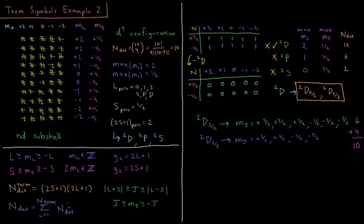In this video we'll do our second example of determining the term symbols of an atom. We have an atom where every subshell is either completely filled or completely empty, and the only partially filled subshell is a D subshell with 9 electrons. Let's determine the term symbols possible for this atom with a D9 configuration.